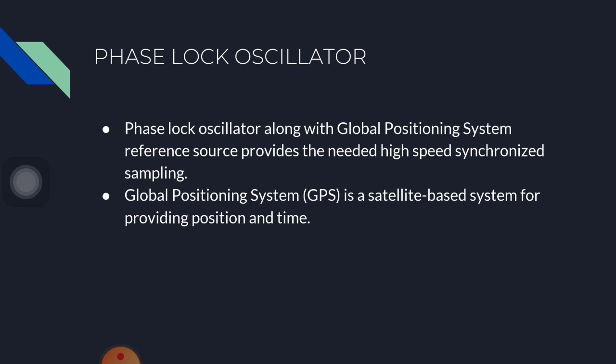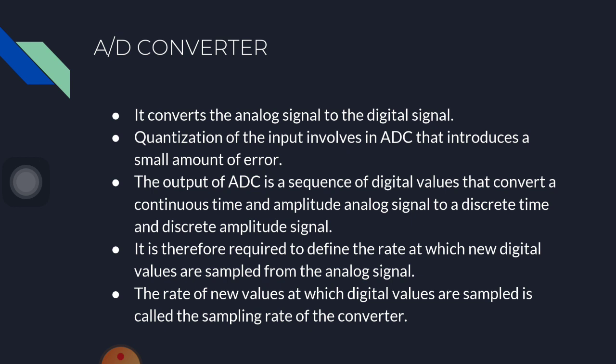Phase-locked oscillator: the phase-locked oscillator, along with a GPS reference source, provides the needed high-speed synchronized sampling. GPS is a satellite-based system for providing position and time.